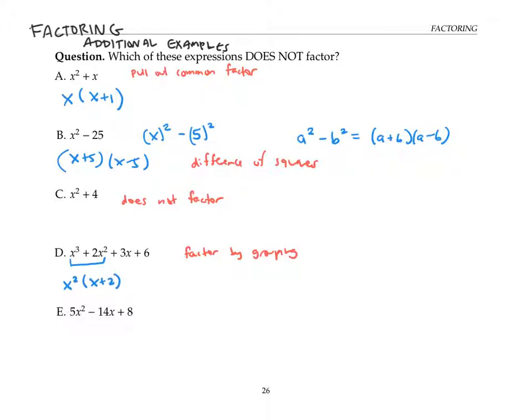And then we factor as much as we can out of the next two terms, that would be a three times x plus two. Notice that the x plus two factor now occurs in both of the resulting terms. So we can pull that x plus two out and get x plus two times x squared plus three. We can't factor any further because x squared plus three doesn't factor.